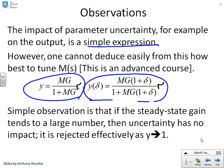You might argue that sensitivity in some sense is going to be something like y of delta minus y over y, but I'm not going to get into fine details of that. We're just going to use the simple observation that if MG is large, then MG over 1 plus MG will tend to 1. And therefore, the uncertainty will have very little effect, because MG times 1 plus delta over 1 plus MG times 1 plus delta will also tend to 1. So one way of rejecting uncertainty is by assuming that MG is large. And that, of course, also has the additional effect that y tends to 1.